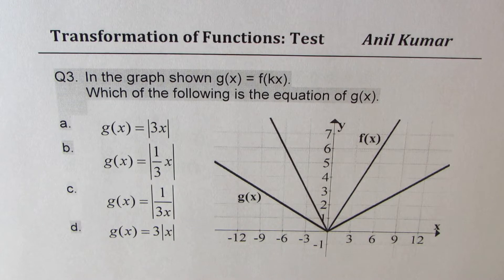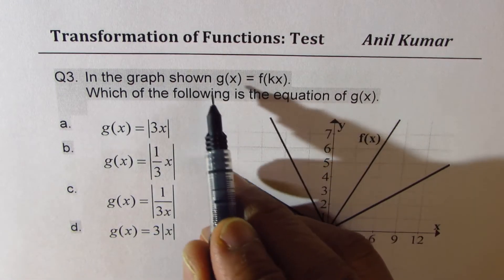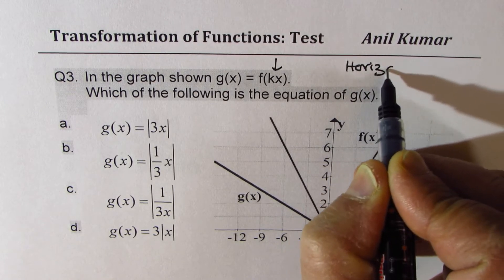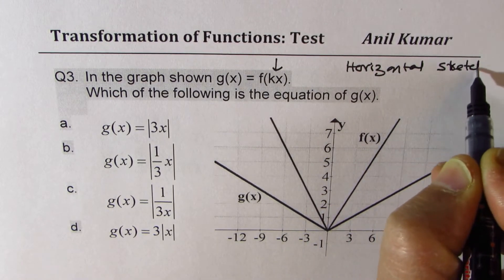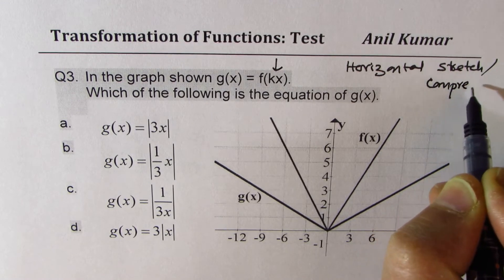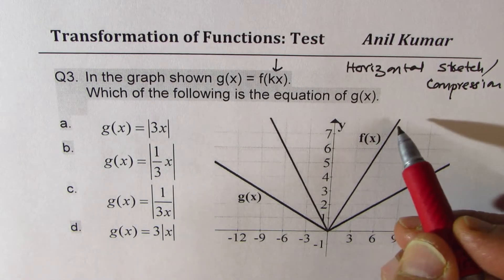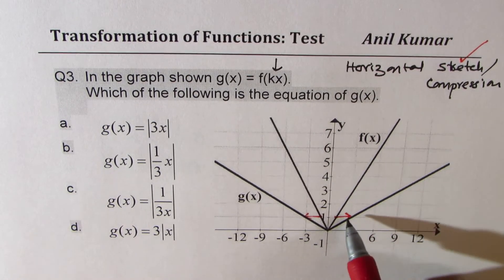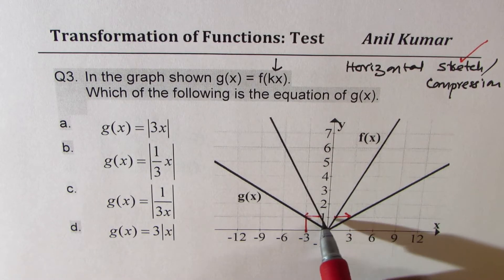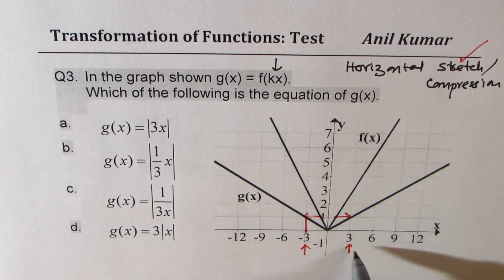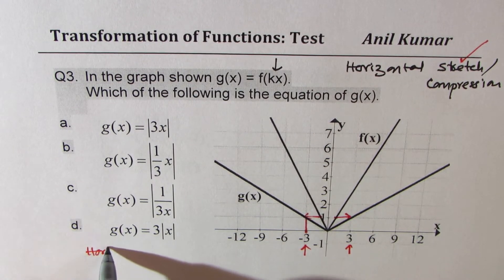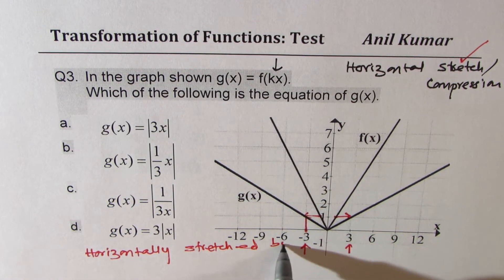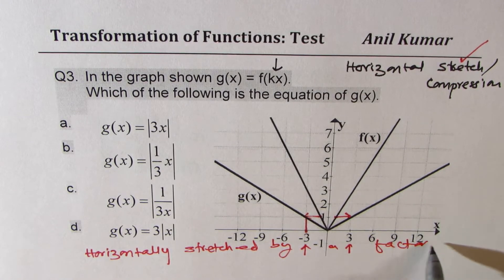Question number 3. In the graph shown, g of x is f of kx. Now this indicates horizontal stretch or compression. In our case, f of x is the original function. So what we see here is that it is stretching outwards. So we have stretch in this case. Now since it is stretching from, instead of 1, it has gone to 3. It has gone to 3.